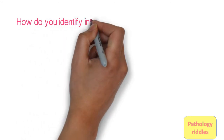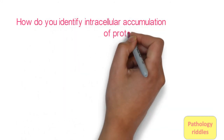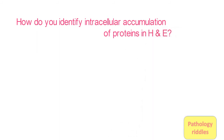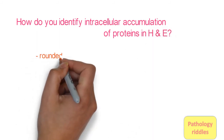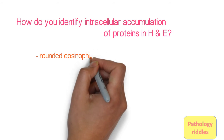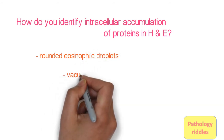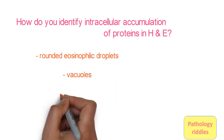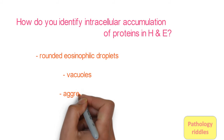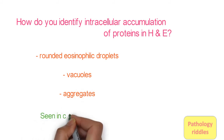Question 9: How do you identify intracellular accumulation of proteins in H&E stained slides? In H&E stained slides, they are seen in the cytoplasm as rounded eosinophilic droplets, as vacuoles, or aggregates.